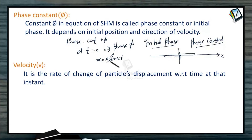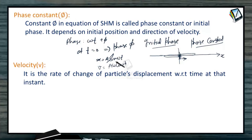For example, if the equation is x equal to a sin(omega t), then at t equal to 0 the particle is at the mean position (x is 0). Velocity is a omega cos(omega t), so at t equal to 0 the velocity is a omega in the positive direction — the particle starts from mean position and moves in the positive direction. So phase constant phi is 0.